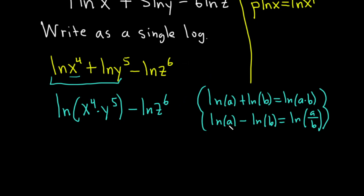Okay, now we'll use the second rule where the subtraction turns into division. So this is the natural log. This whole piece is your a, and you notice it's up top over here. So parentheses, and this whole piece will be up top. This is x to the fourth, y to the fifth, all being divided by z to the sixth.